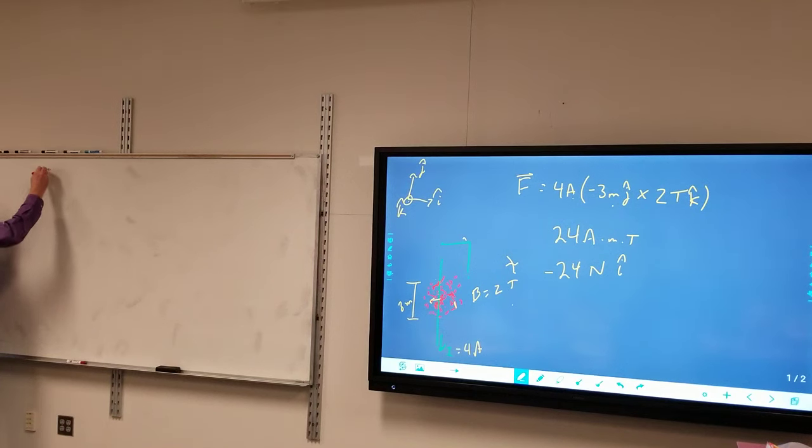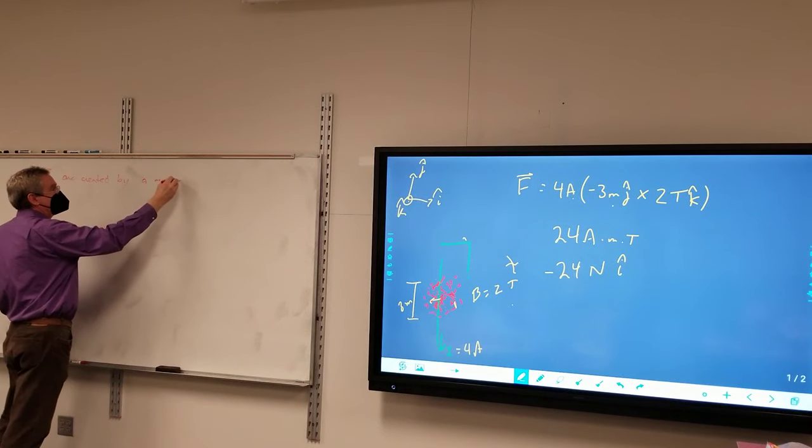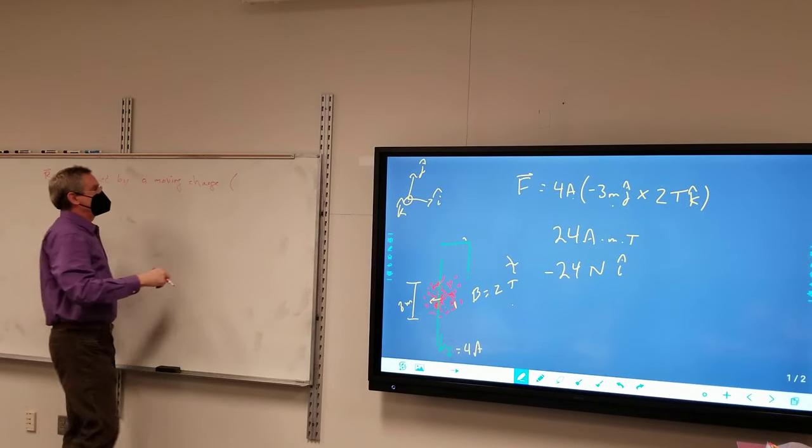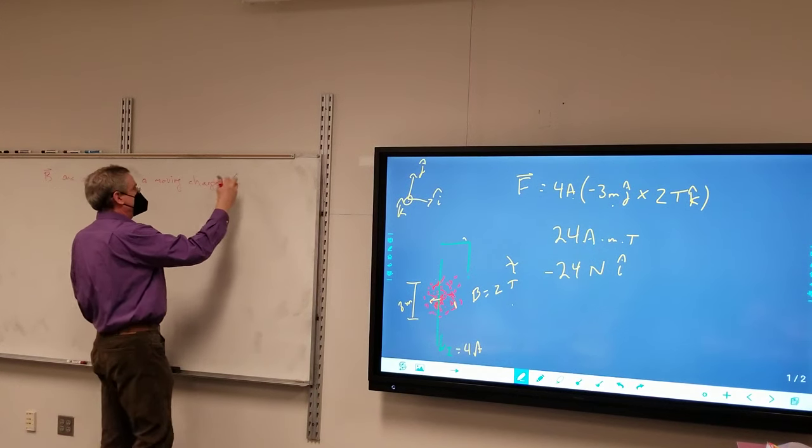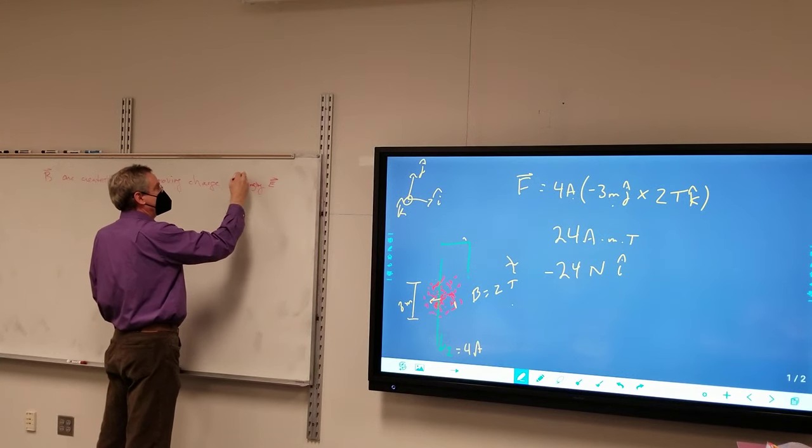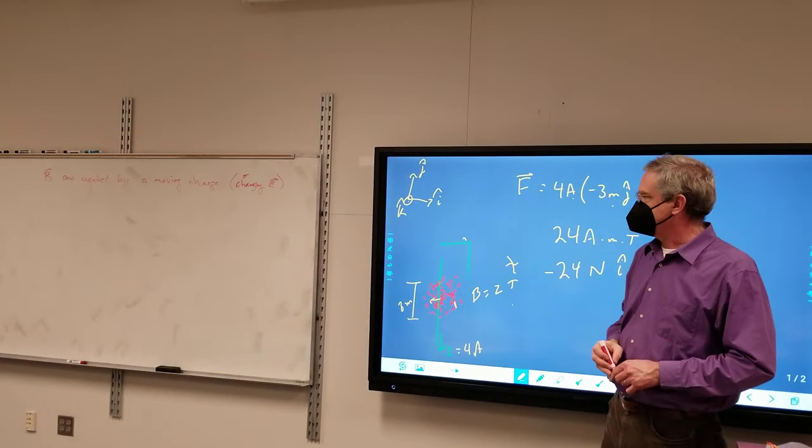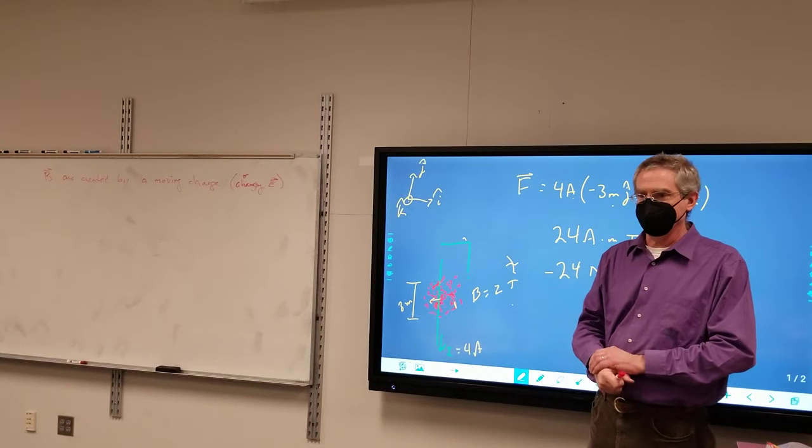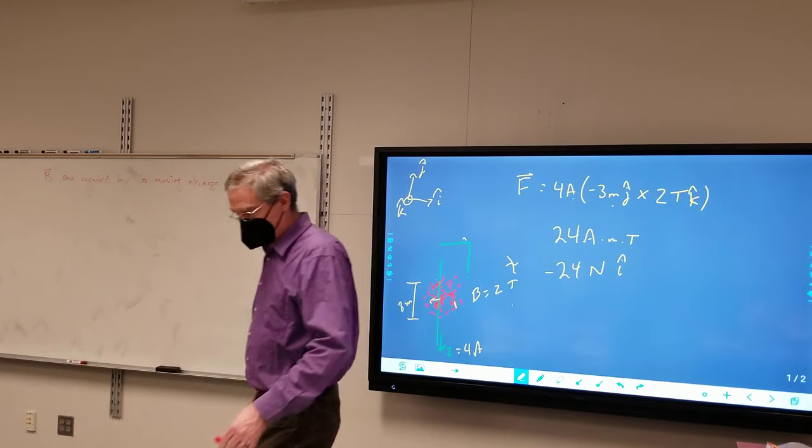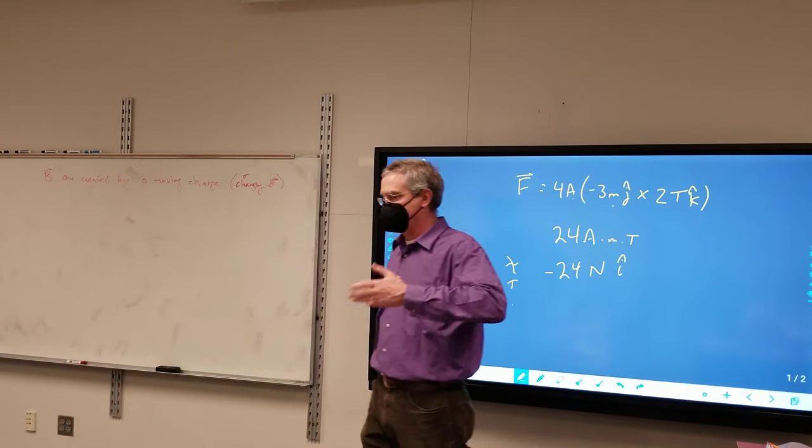So magnetic fields are created by a moving charge. And parenthetically, this is something for a couple chapters from now, for a changing electric field. Just sort of a sneak peek at what's coming up. This was one of, this is the beginning of Maxwell's great contribution. It's the major piece of evidence that tells us that electric fields actually are real, it's not just a math thing.